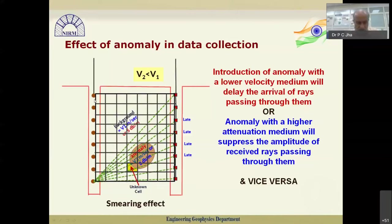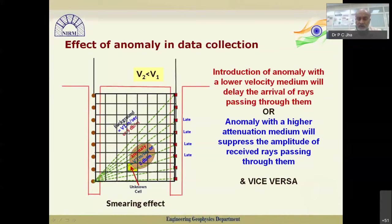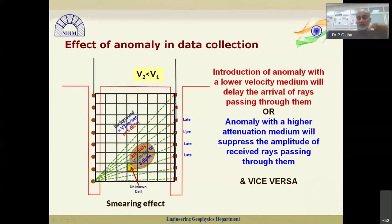During data collection, we have the transmitter borehole and receiver borehole. The source is triggered and the signal passes through an anomalous zone — which could be a weak zone, damage zone, fault plane, shear zone, or any anomaly. This anomaly can be characterized by two properties: lower velocity (V2 less than V1, where V1 is background velocity) or higher attenuation, say 8 dB/meter versus 5 dB/meter background. To solve this, we divide the entire area between the two boreholes into a grid of 50×100 or whatever size chosen. The received waveform is always late when passing through a lower-velocity medium.